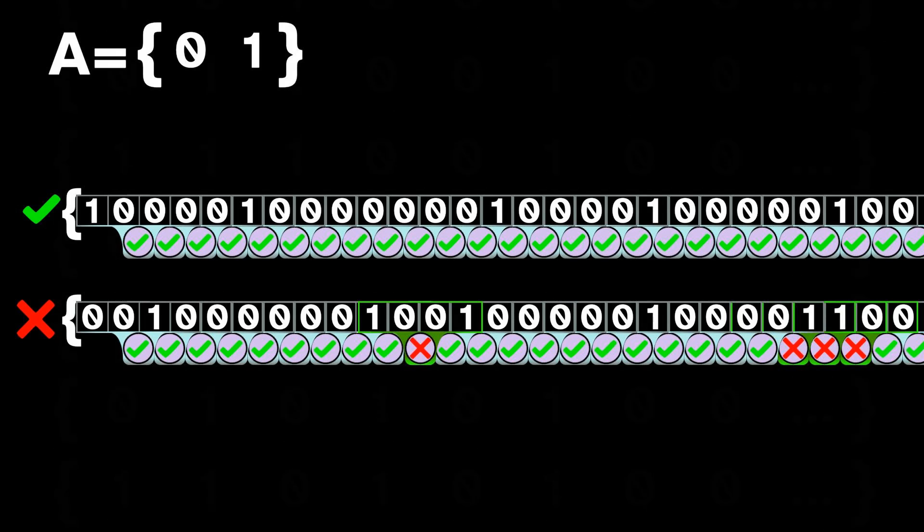We'll call these machines validators because they check whether the current sequence is valid or not under the given rule. The set of all sequences which can be checked by a local validator is a shift of finite type, an SFT, and conversely, every SFT can be described in terms of a validating machine.